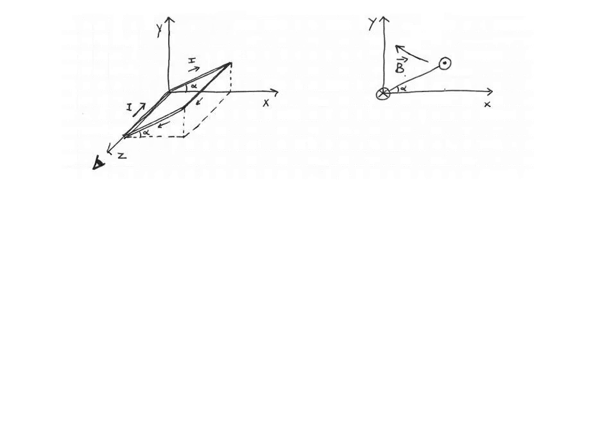Now we need to place the magnetic moment. To find its direction, wrap your fingers along the current — your hand has to be sideways, fingers sticking out in the upper right-hand corner and curling back in at the origin. You'll see that your thumb points down and to the right. So we draw the magnetic moment vector pointing down and to the right, at 90 degrees to the loop.